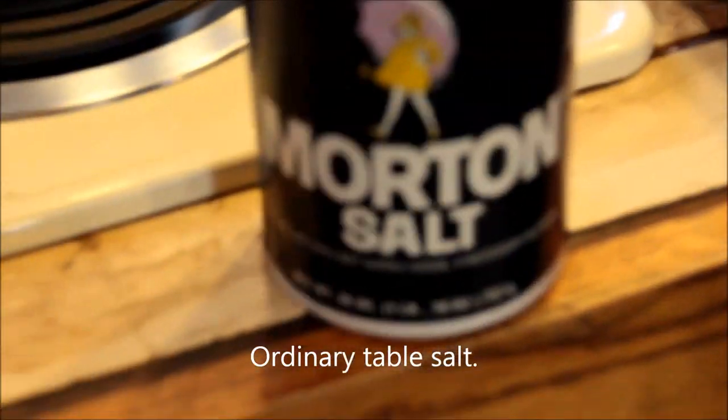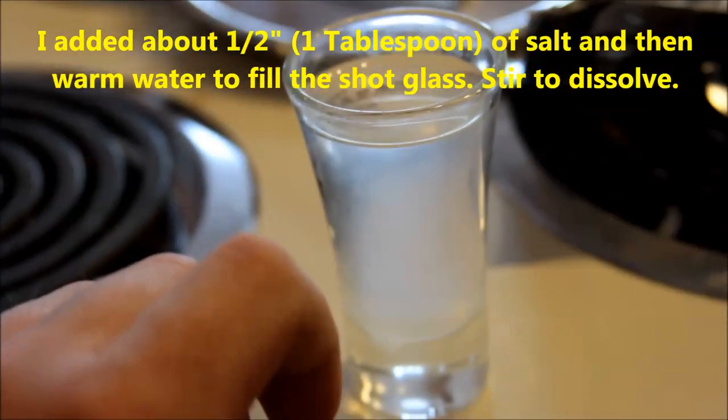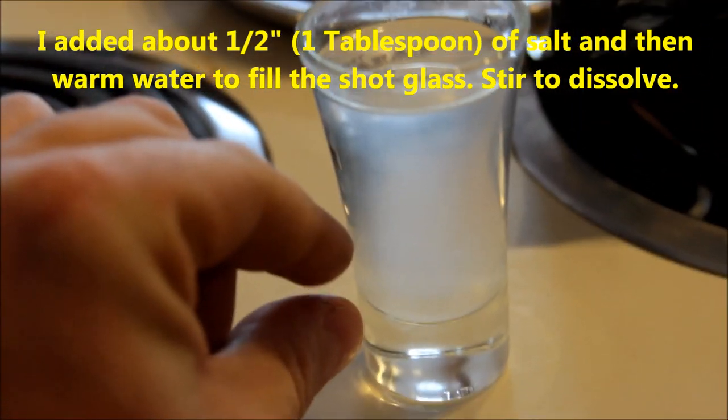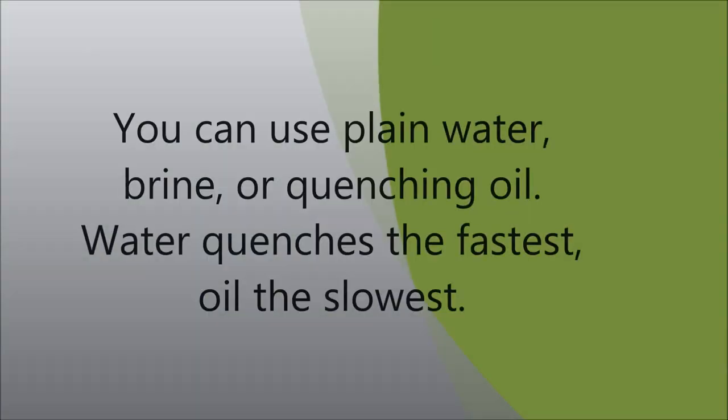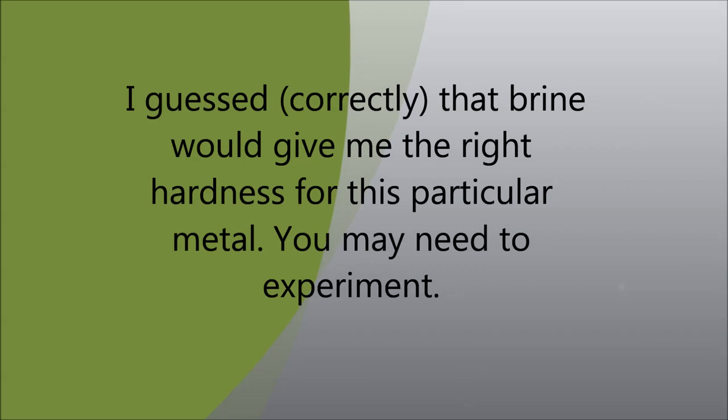We have the quenching solution I'm going to use—it's a brine made of table salt and warm water. For quenching you can use plain water, oil, quenching oil, or brine. I chose brine because it's kind of in the middle as far as how quickly it hardens.